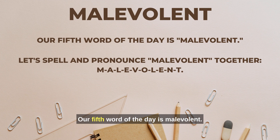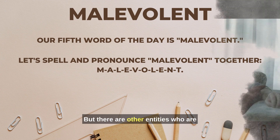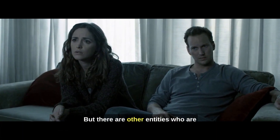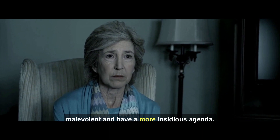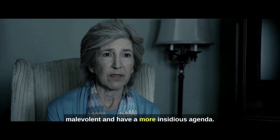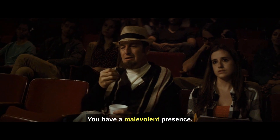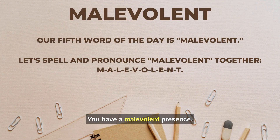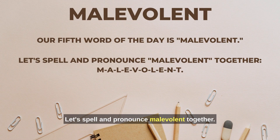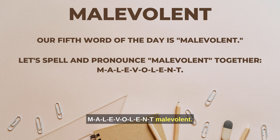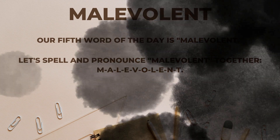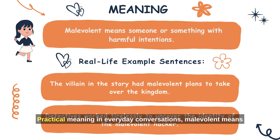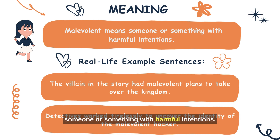Our fifth word of the day is malevolent. 'There are other entities who are malevolent and have a more insidious agenda.' 'You have a malevolent presence.' Let's spell and pronounce malevolent together: M-A-L-E-V-O-L-E-N-T. Malevolent. In everyday conversations, malevolent means someone or something with harmful intentions.